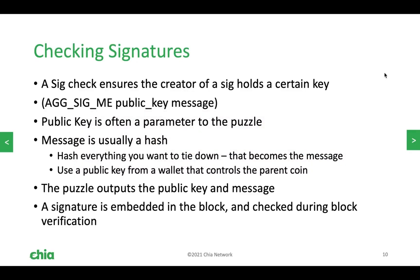The one we're going to talk about is AGsigMe. This confusingly worded condition means aggregate signature. The first argument is a public key, and the second argument is a message. That message can be anything, but it's usually the hash of a collection of other data — that data can be a string of bytes, a list, a list of lists, whatever. The key is that whichever private key that public key is attached to has the ability to produce a signature of that message that will pass the AGsig check.